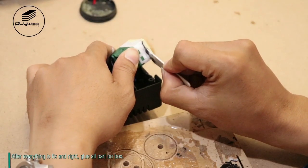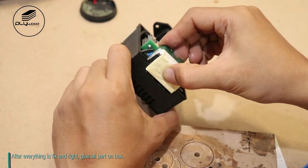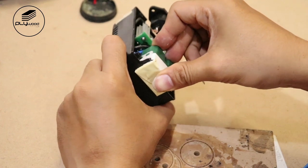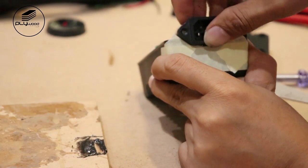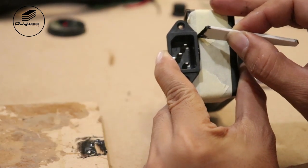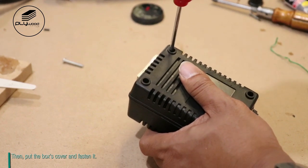After everything is fixed and right, glue all parts on the box. Then put the box cover on and fasten it.